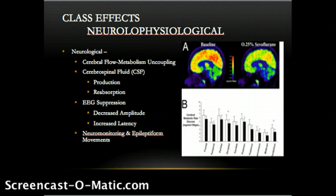Sevoflurane, isoflurane, and enflurane are notable for producing epileptiform activity at high concentrations. This effect is particularly pronounced with hyperventilation, as has been reported with pediatric mask inductions with sevoflurane.